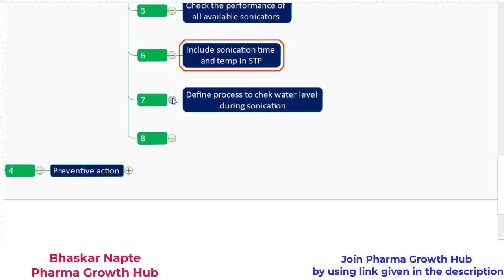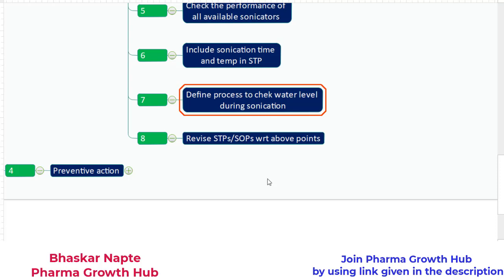The seventh point: define a process to check the water level during sonication. Even if the sonicator is running, if the water level is not up to the mark, sonication will not happen effectively, which will hamper your extraction and assay. Define this process in your SOP for the sonicator. Finally, revise all standard test procedures and standard operating procedures with respect to the above applicable points. If you find additional points that need to be investigated as part of corrective action, please do that as well.